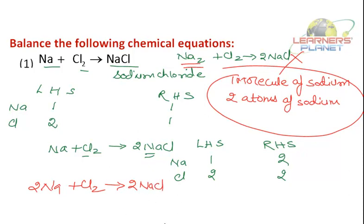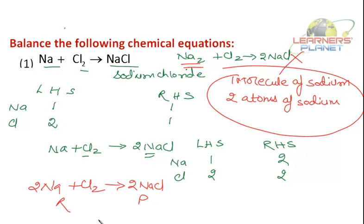It's so simple. Just compare the number of atoms of each element on both sides — that is, the reactant side and the product side. And keep in mind, matter can neither be created nor be destroyed. So none of the atoms should be missing and none of the atoms should be created.